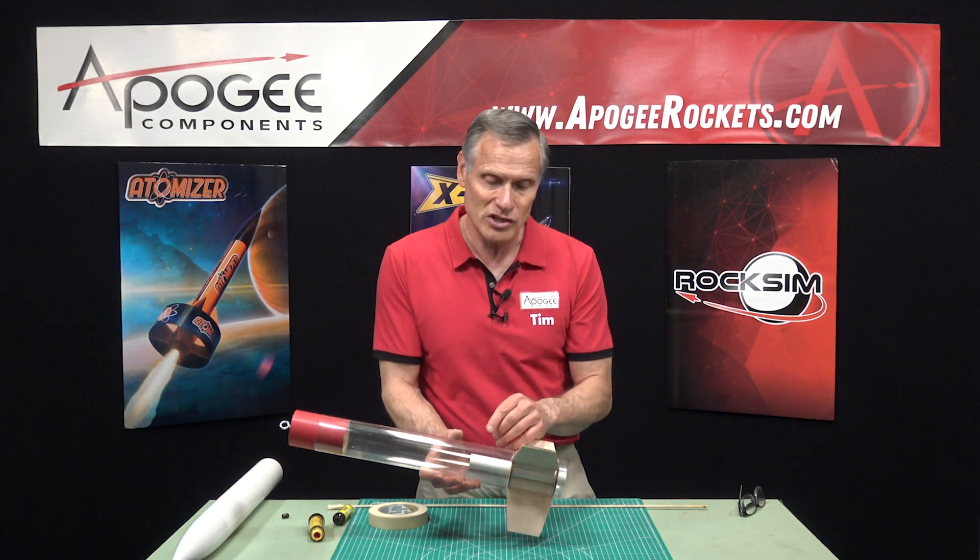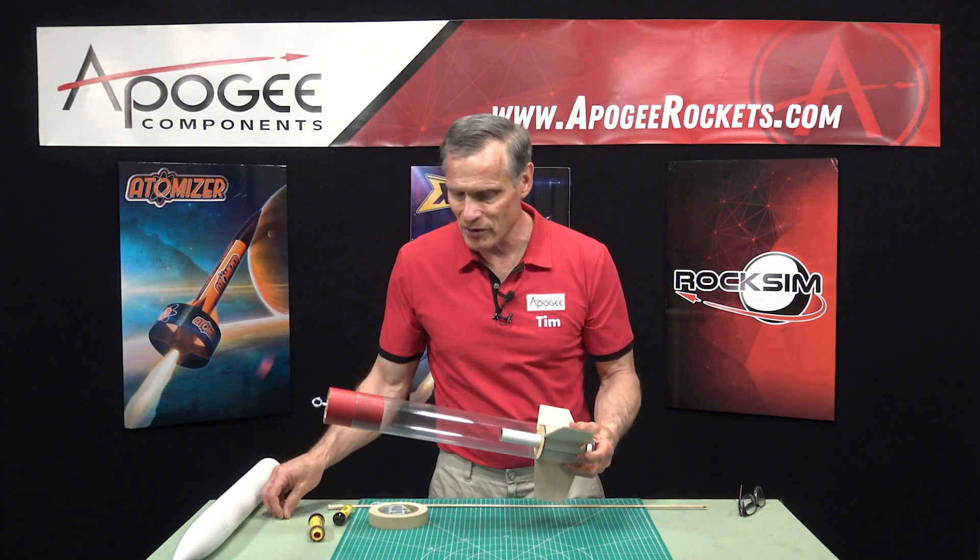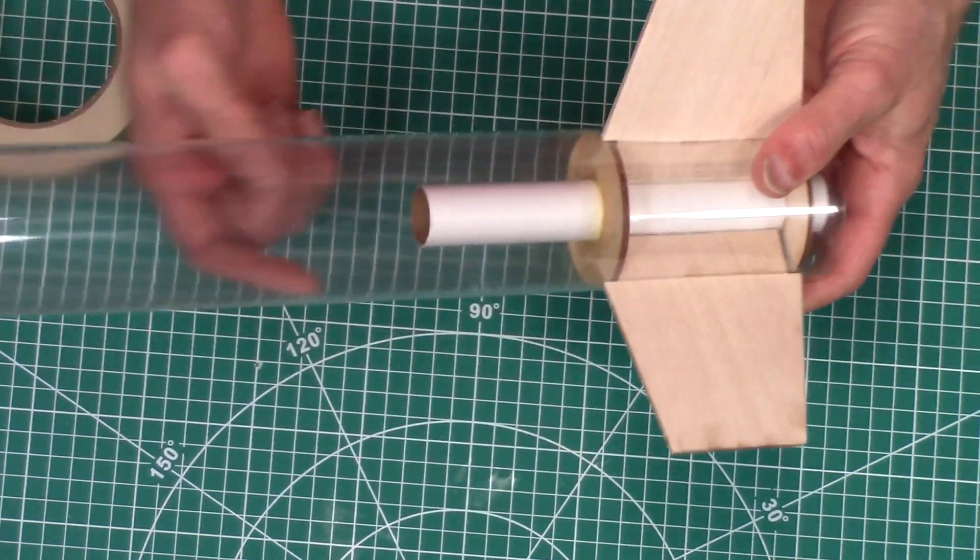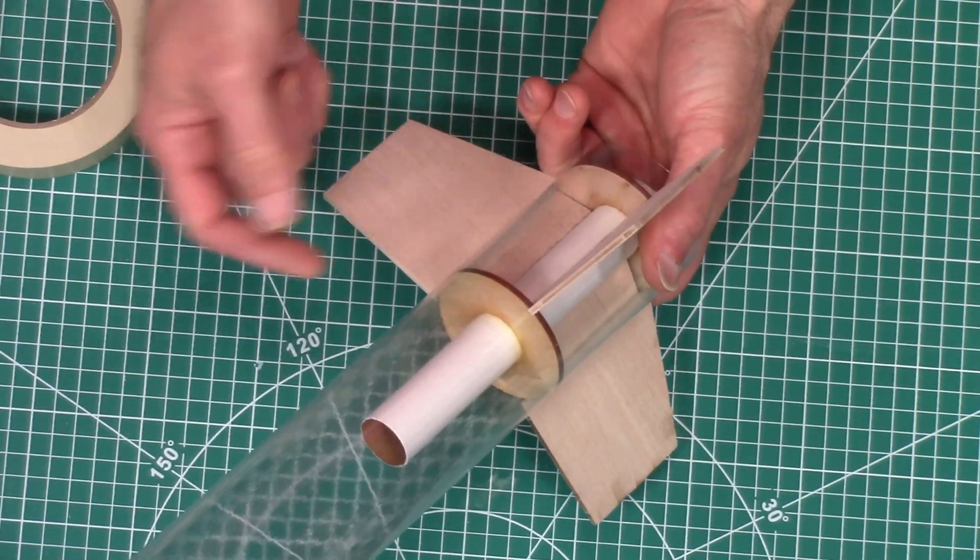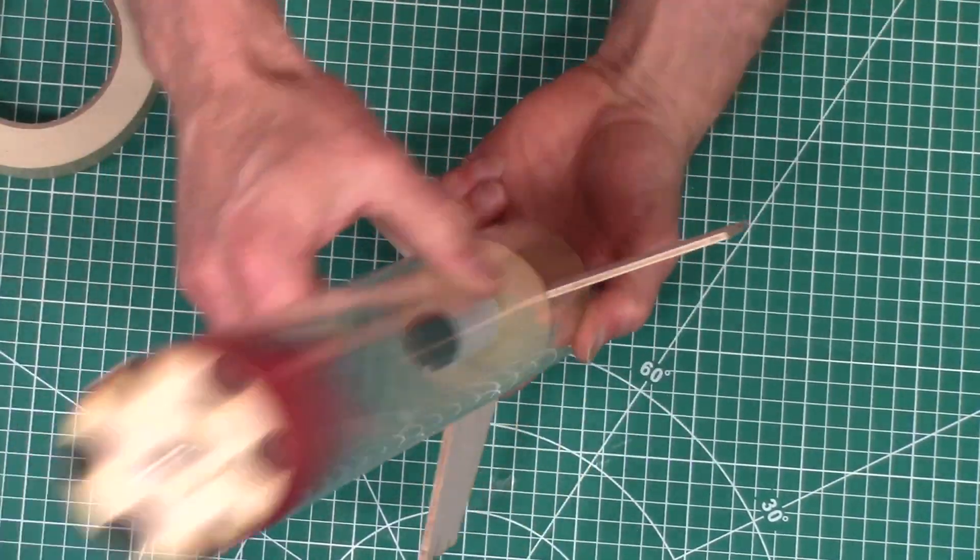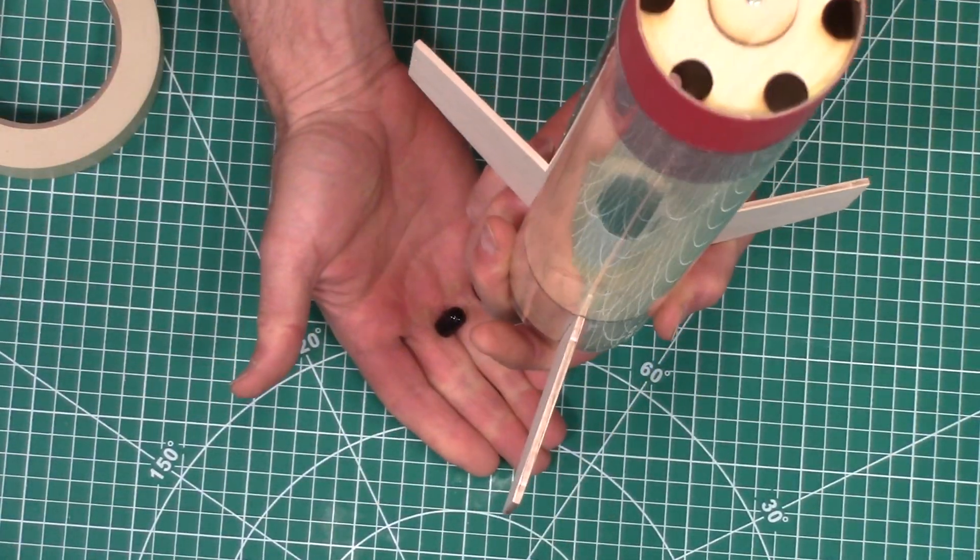But the advantage is when that ejection cap goes inside now that tube is flush with the centering ring and then it's just a matter of rolling it around and it will fall out.